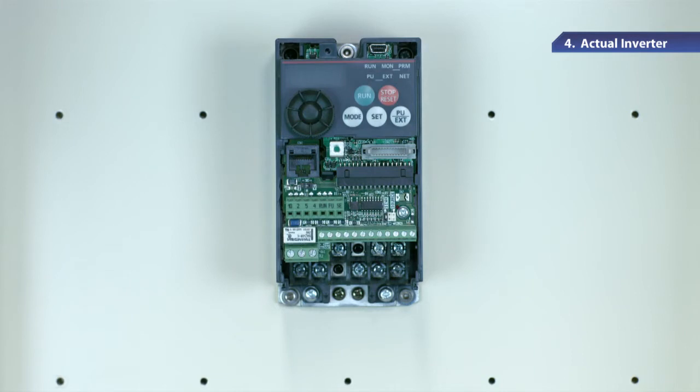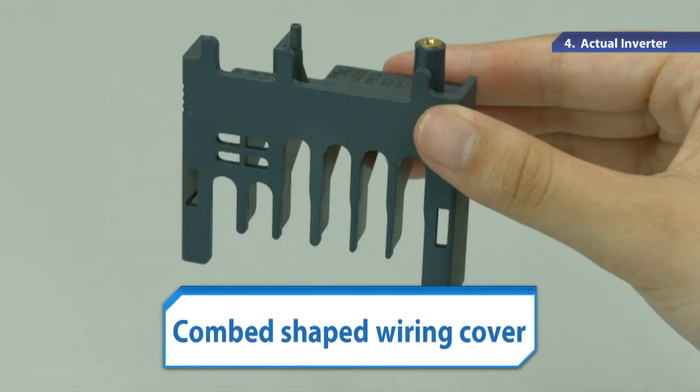To ensure safety, the wiring cover is designed not to allow users to touch the metallic parts of the power supply. As it looks like a comb, it's called a comb-shaped wiring cover.